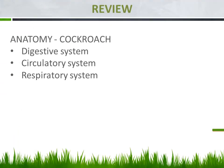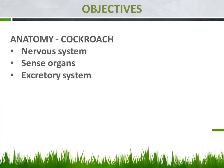In the previous session we discussed about one of the seen vertebrae, that is cockroach and its anatomy. We discussed about three systems: the digestive system, the circulatory system, and the respiratory system. Today we are going to discuss the nervous system and the sense organs of cockroach, as well as the excretory system of cockroach.